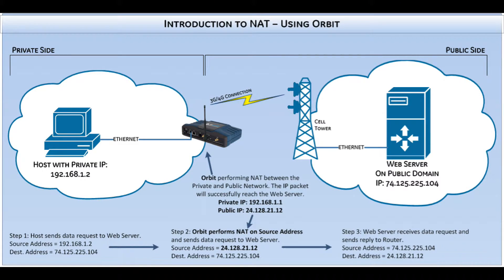This next diagram shows the Orbit as the routing device connected to the public cell network through either a 3G or 4G connection. Orbit will now be the router that NATs all IP packets over the cellular interface from the private IP host. By default on 3G and 4G units, NAT is already configured and applied to the cellular interface. If NAT is not configured on the cellular interface, the cell provider will drop the connection whenever it sees an IP packet with a source address equal to a Class A, B, or C private IP address.